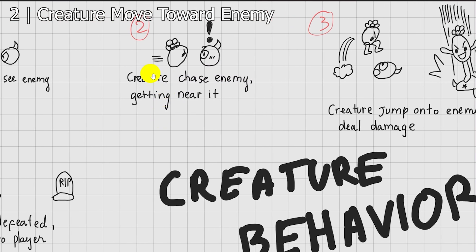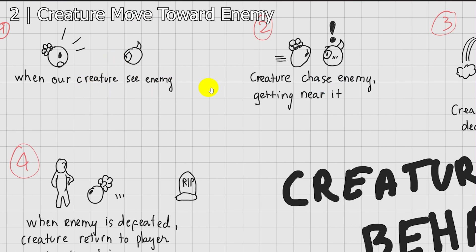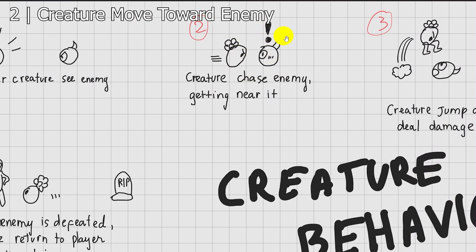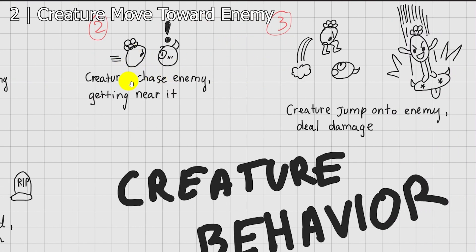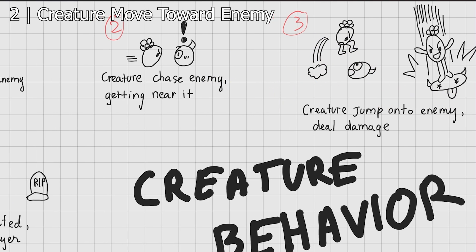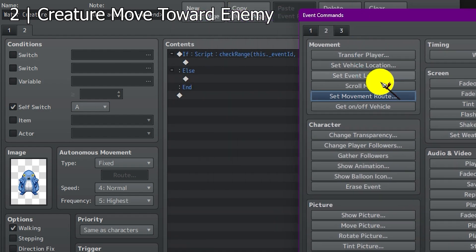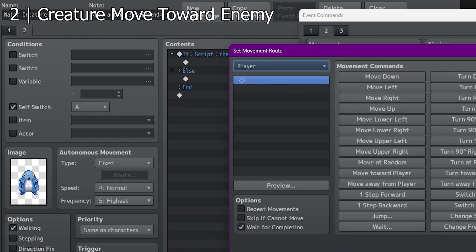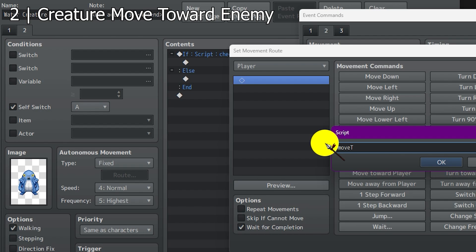Now let's move on to step 2, which is when the creature sees the enemy, it'll chase the enemy. And then when in a certain range, our creature will jump onto the enemy. To do that, we first create a set movement rule. We use move to position — an event with node tag 'enemy'.